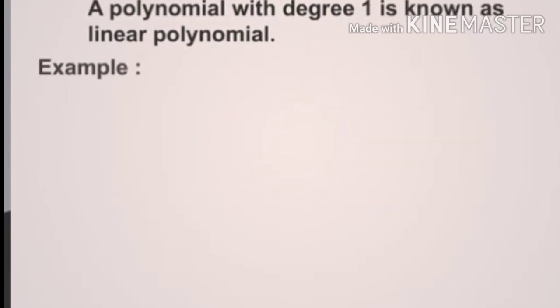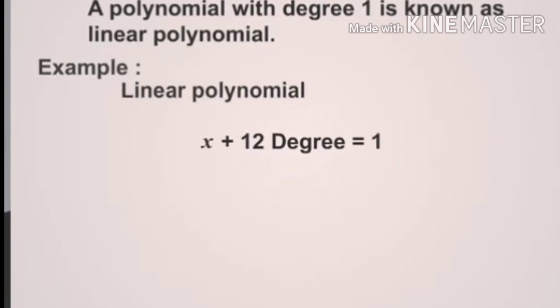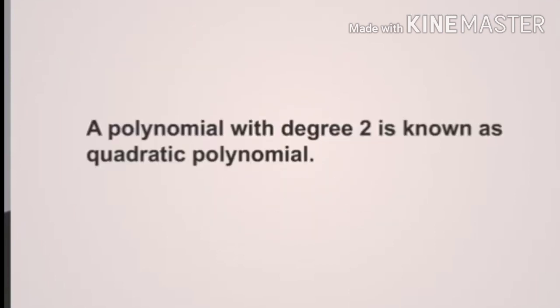Example a: x + 12. Degree is equal to 1. So it is a linear polynomial.